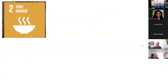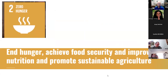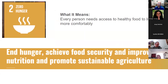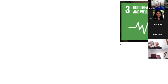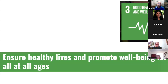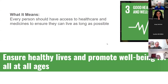Goal 2 is zero hunger — food security and nutrition — meaning we can all have healthy food to live more comfortably. Goal 3 is good health and well-being: we want healthy lives and well-being for everyone at all ages, ensuring everybody can access healthcare and medicines so their life is comfortable and they can live as long as possible.